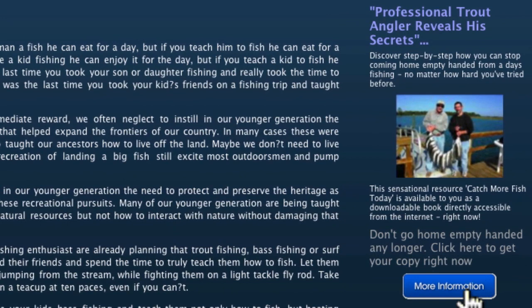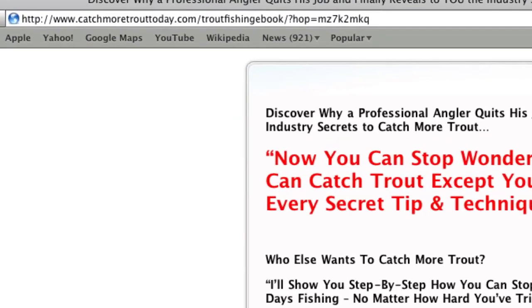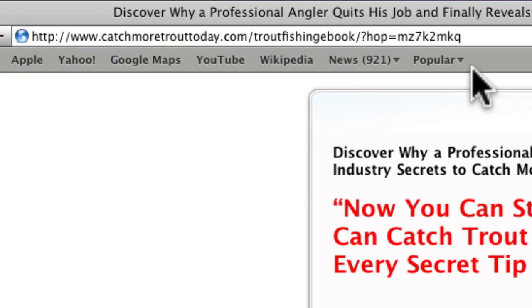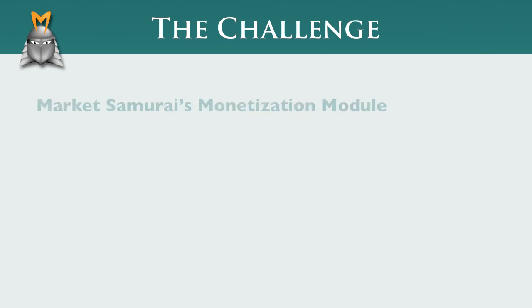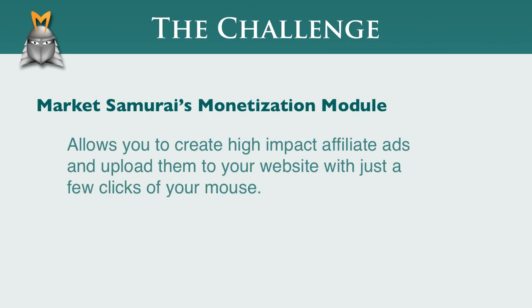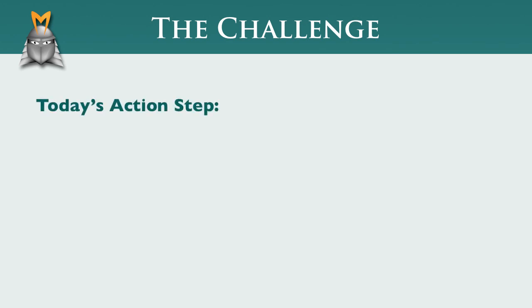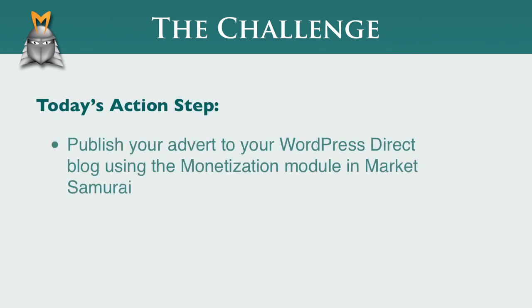If I click the Find Out More button, I get taken straight to the product website where I can verify that my affiliate information is carried through. So there you have it — Market Samurai's Monetization module allows you to create high impact affiliate ads and upload them to your website with just a few clicks of your mouse. Today's action step is to publish your advert to your WordPress Direct blog using the Monetization Automation module in Market Samurai.